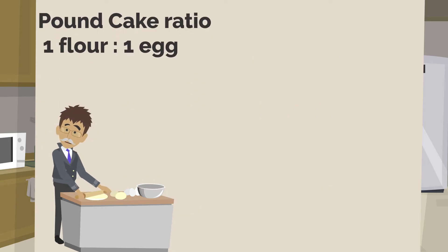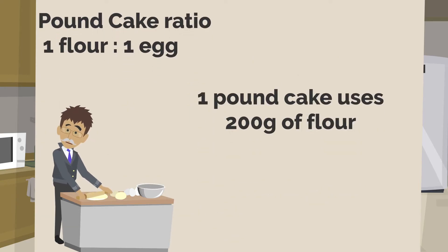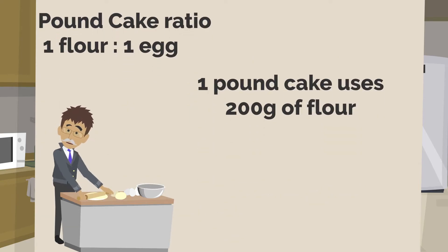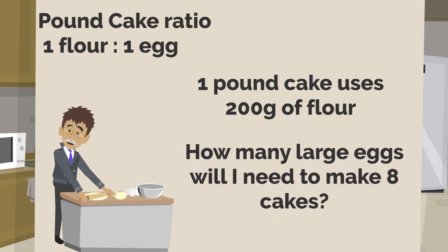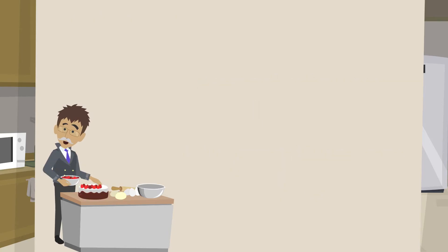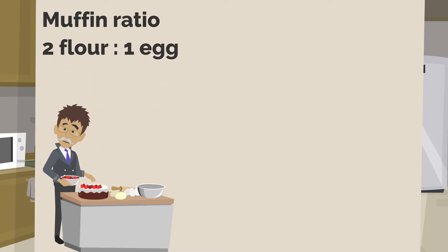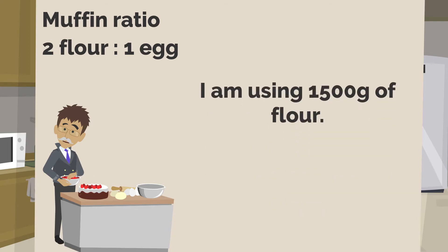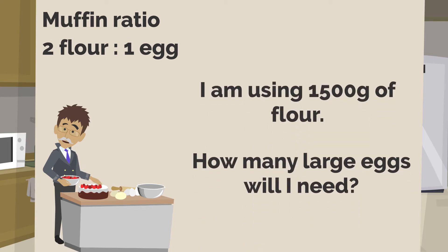I plan to bake eight pound cakes using 200 grams of flour each. How many large eggs will I need? The Food Network notes the baking ratio for muffins is two flour to two liquid to one egg to one fat. The blueberry muffins I am making for the fundraiser need 1,500 grams of flour. How many eggs will I need?